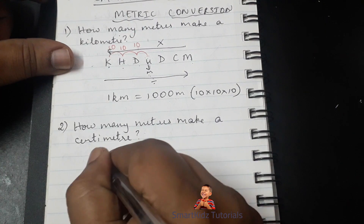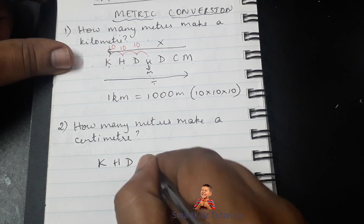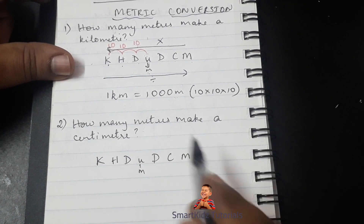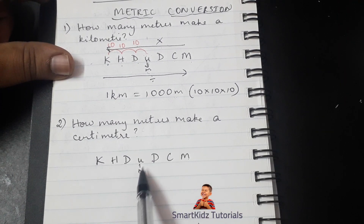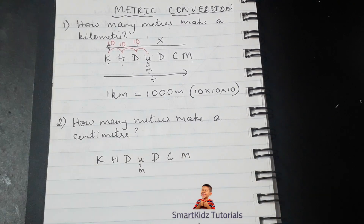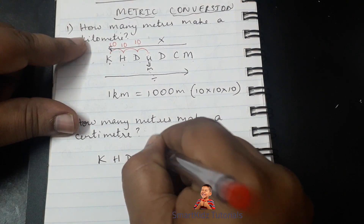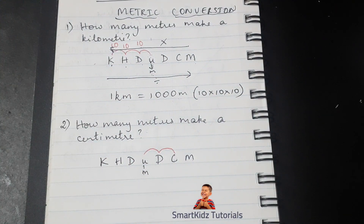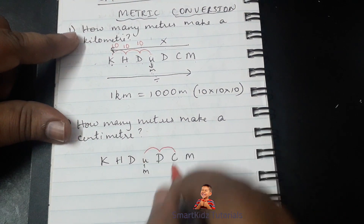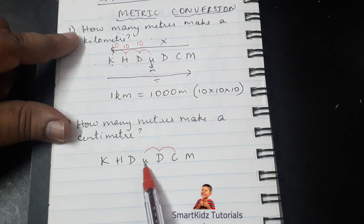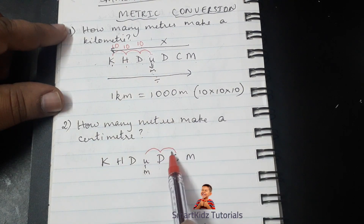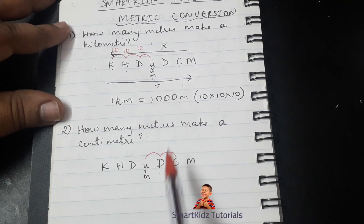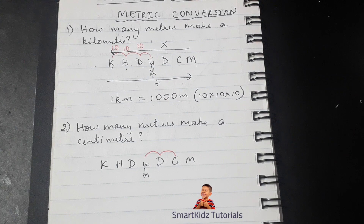Our next question is: how many meters make a centimeter? So once again we write down our scale. The unit is meter because we are talking in meters. We are asked how many meters — which is here — make a centimeter, which is over here. That means we will have to go from the meter position to the centimeter position, moving two places. When we jump two places towards our right, we have to divide.